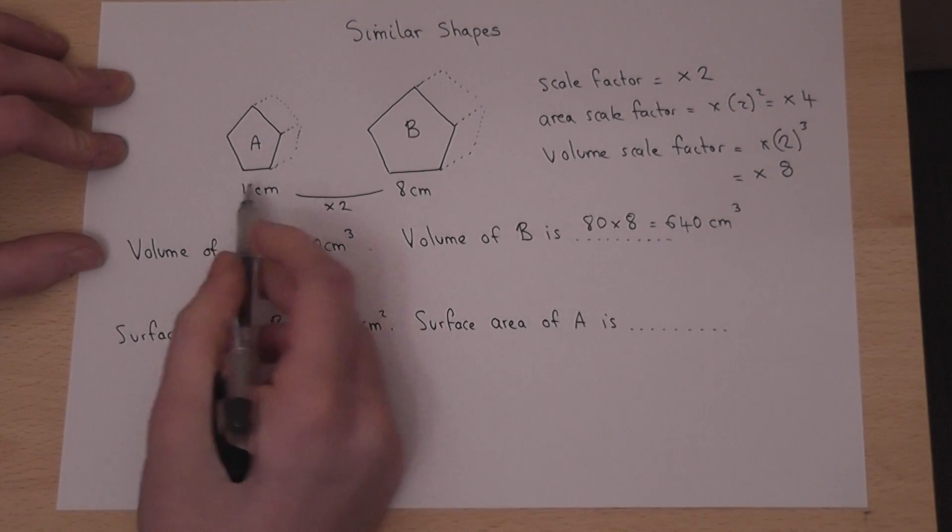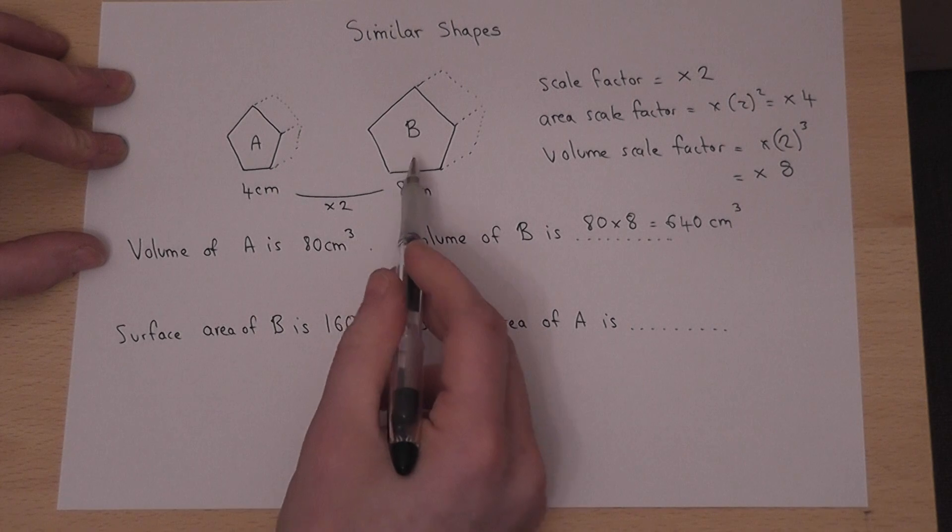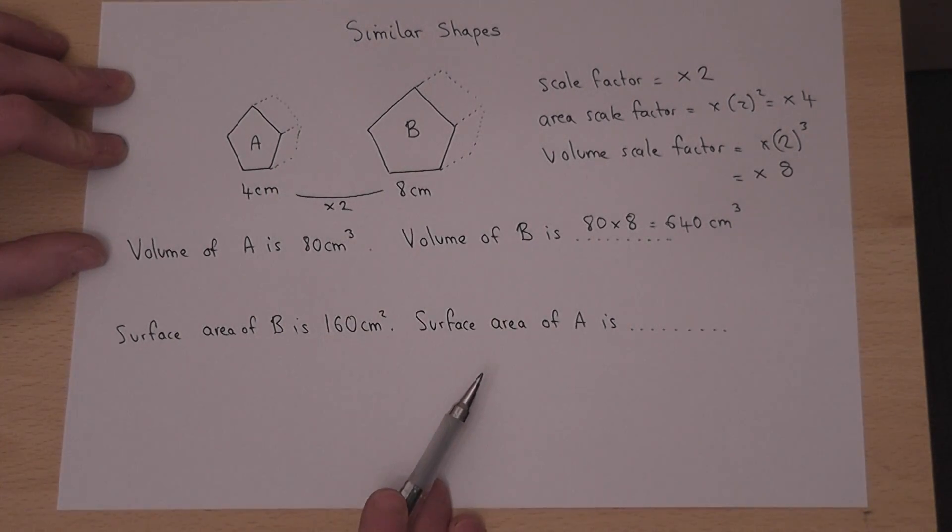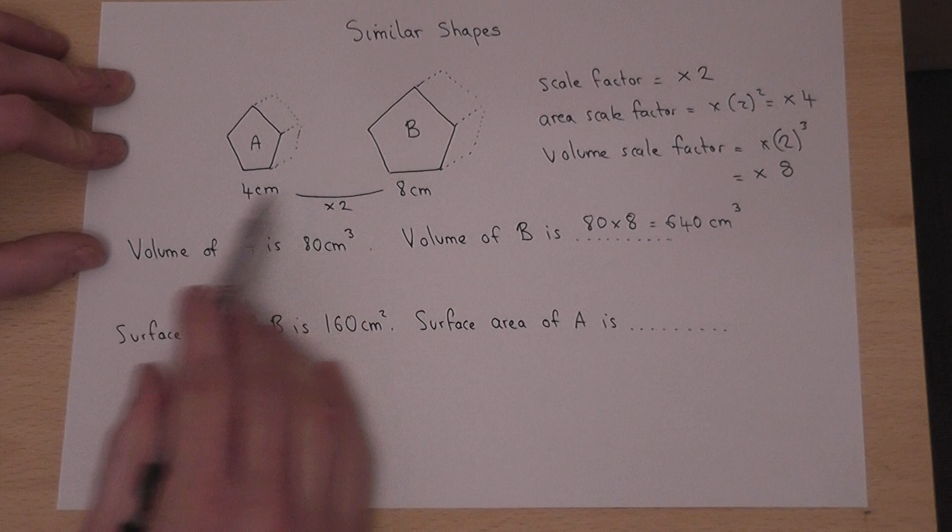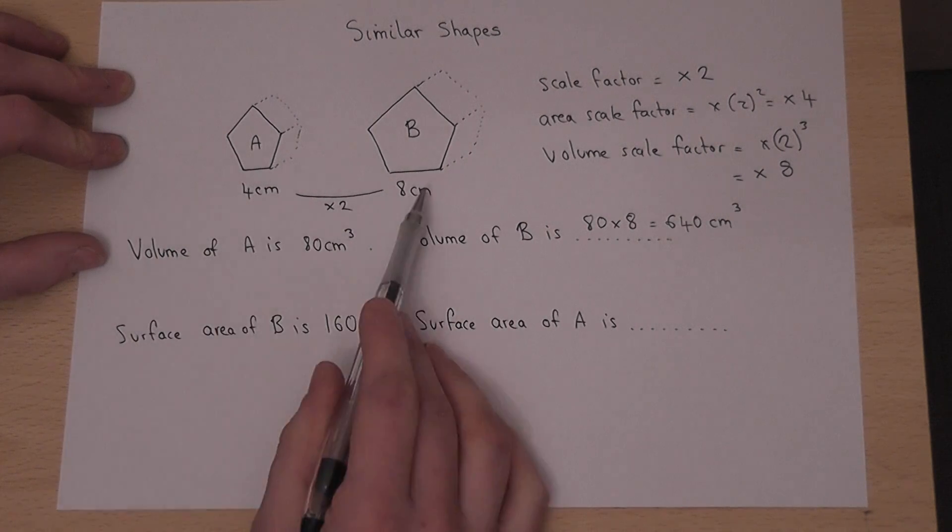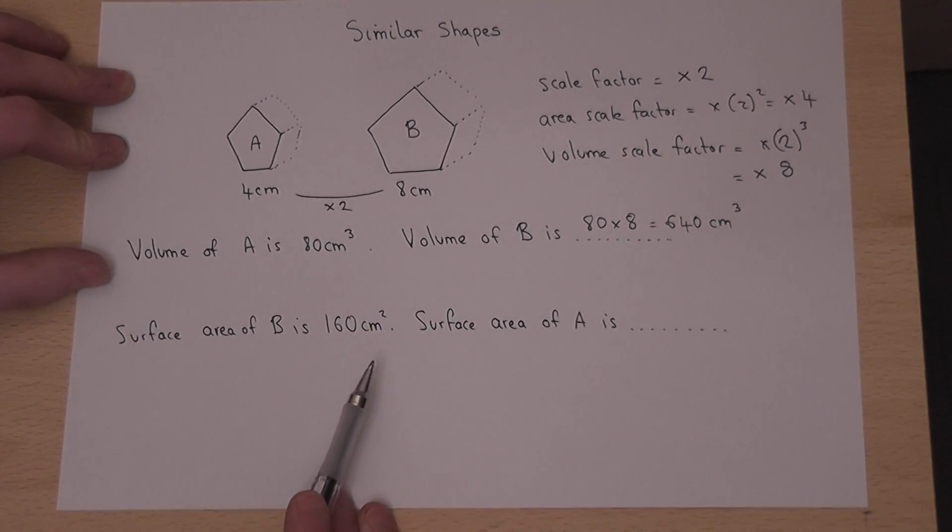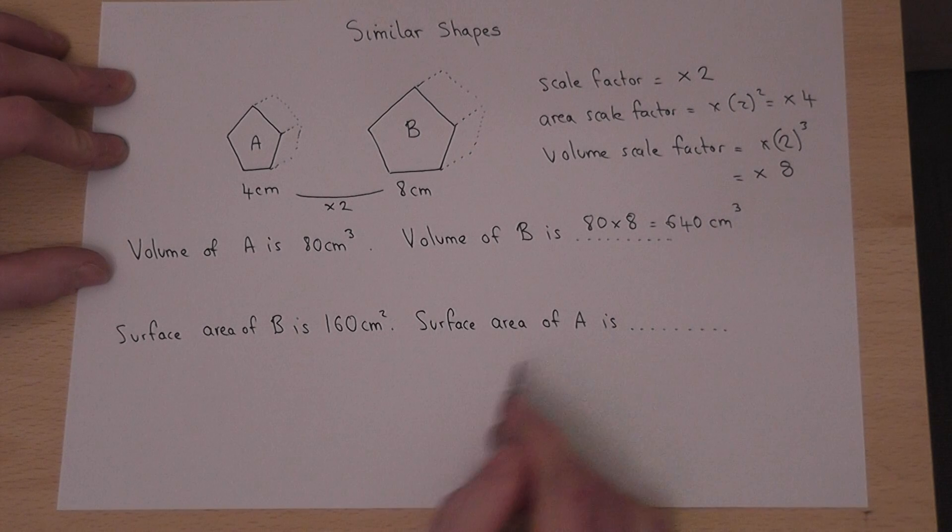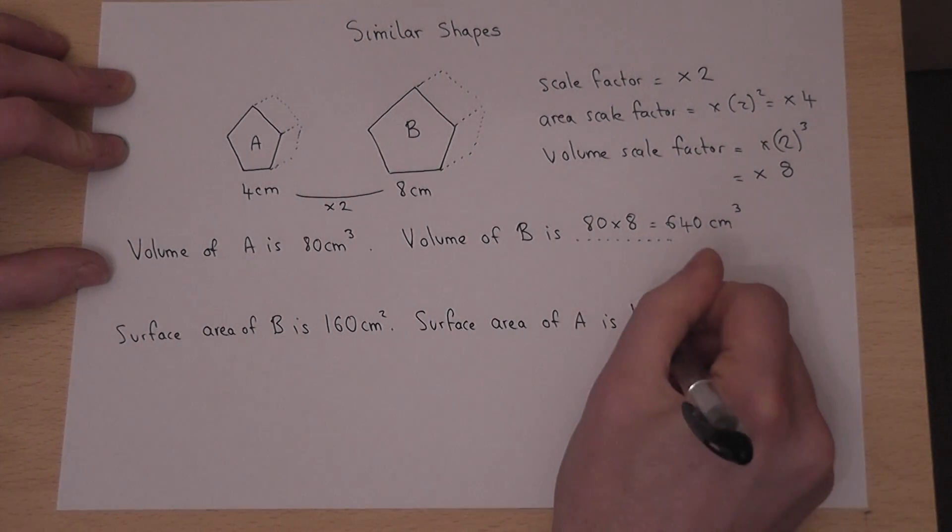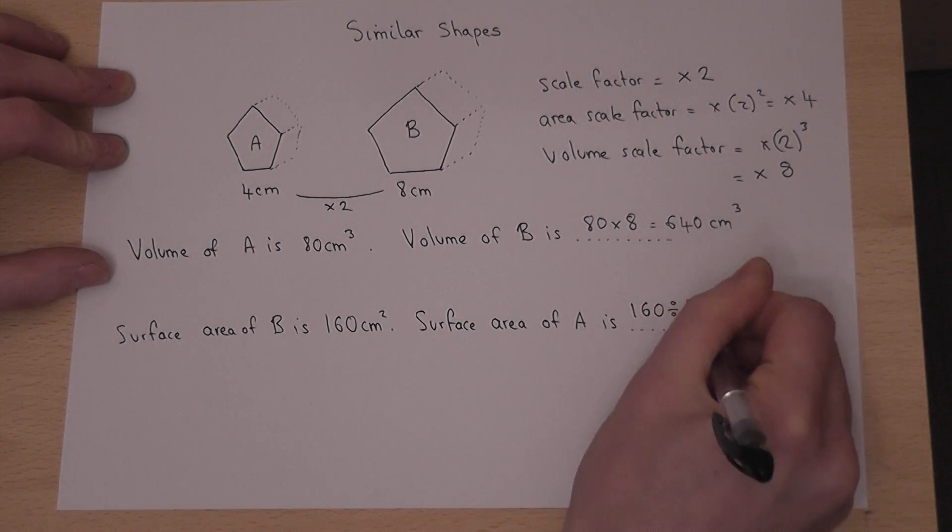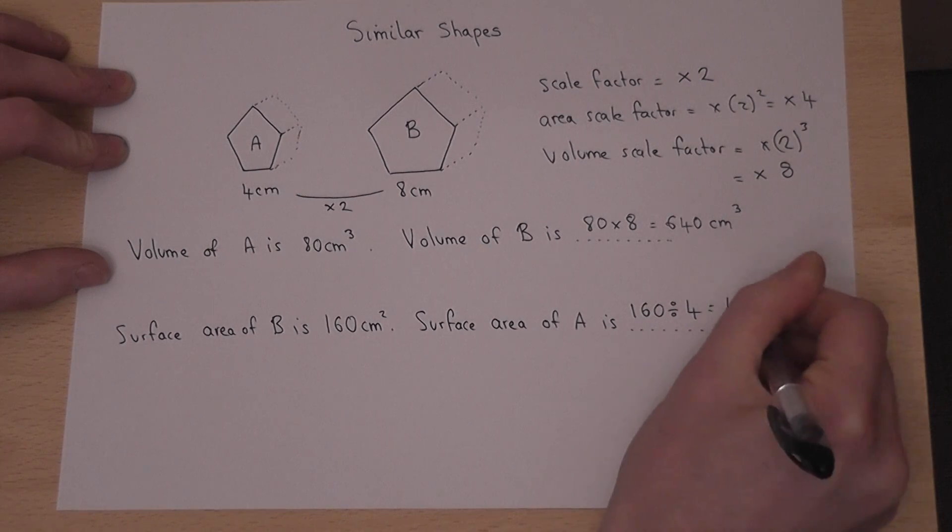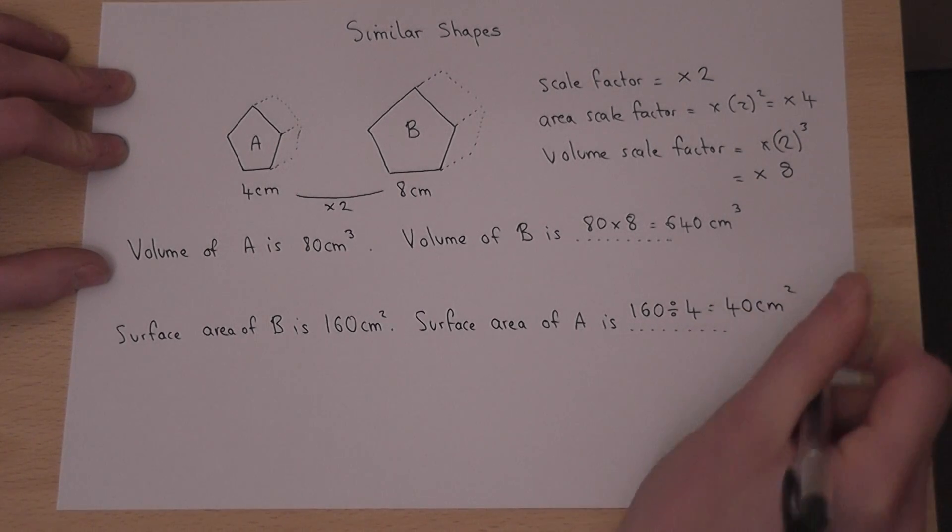So to get from A to B we times by 4. But this question says is given B, how do you get to A? So rather than times by 4 we reverse it and we divide by 4. So therefore the surface area of A is 160 divided by 4, which is 40 centimeters squared.